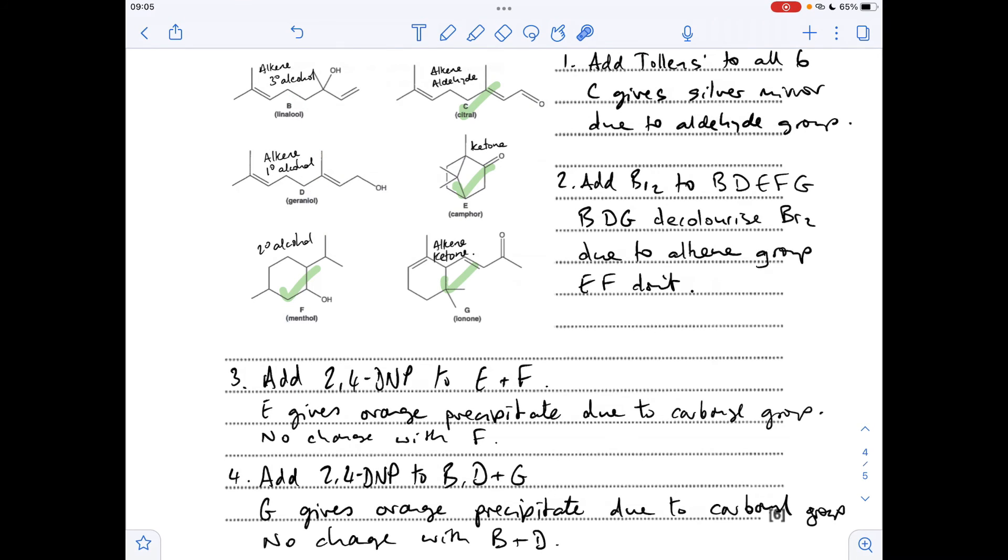So you can see they've both got alcohol functional groups. The alcohol in B is a tertiary alcohol, whereas D is a primary alcohol. So if we add acidified potassium dichromate to both of these, D will oxidize, so you'll get that orange to green color change. B can't be oxidized because it's a tertiary alcohol, and that's how we'd identify or distinguish between those two.